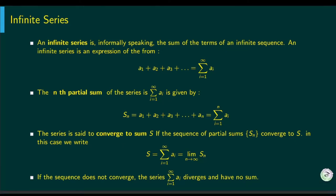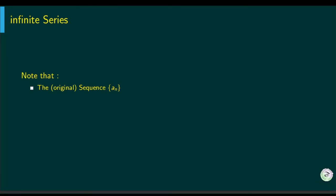A series can be written as a1 plus a2 plus a3, with three dots meaning the pattern continues. The sequence of partial sums is the sum of the first n terms. If that sequence converges to S, we say the series converges to S, denoted by sigma from i equals 1 to infinity. The original sequence, the series, and the sequence of partial sums are all related but distinct objects.